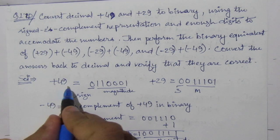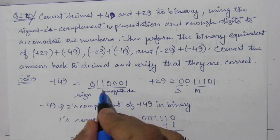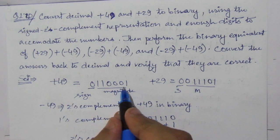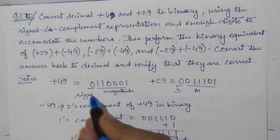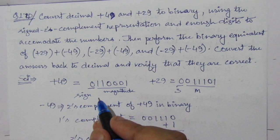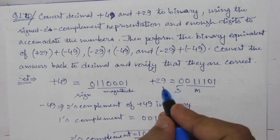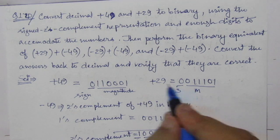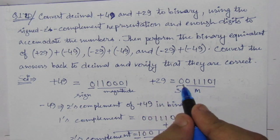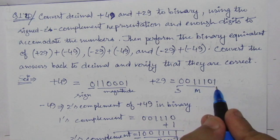First, we have to convert these decimal numbers to their sign-magnitude representation in binary. 49 in magnitude can be represented as 110001, and the plus symbol is given by 0 in sign-magnitude. Similarly for +29, the sign bit is 0 because it is positive, and the magnitude is 011101.